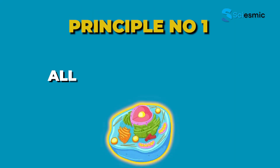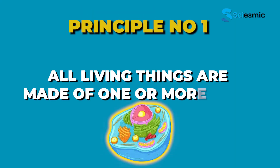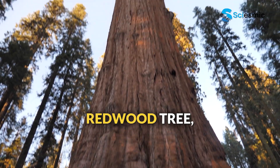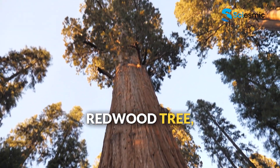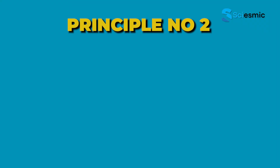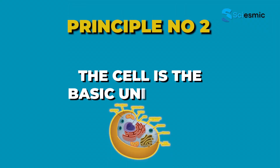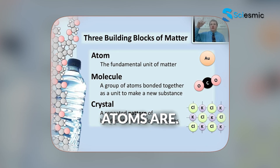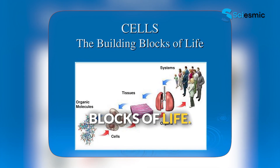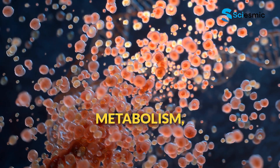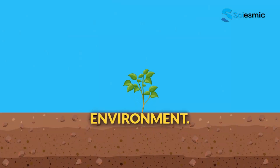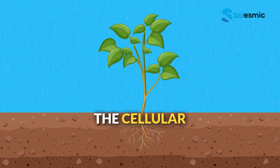Principle one: all living things are made of one or more cells — whether it's a tiny bacterium, a towering redwood tree, or you. Every living thing is cellular. Principle two: the cell is the basic unit of life. Just like atoms are the building blocks of matter, cells are the building blocks of life. Everything alive does metabolism, growth, response to environment — all of that happens at the cellular level.